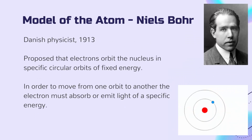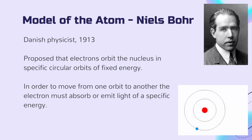Soon after, Danish physicist Niels Bohr proposed that electrons orbit the nucleus in specific circular orbits of fixed energy, and that in order to move from one orbit to another, the electron must absorb or emit light of a specific energy.